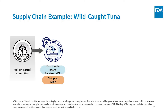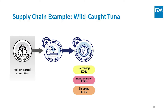Now that the tuna has been received on land, the seafood company is going to send it to a fish processor who will turn it into tuna steaks for sale at a restaurant. The seafood company must maintain key data elements related to the shipping of the tuna to the next point in the supply chain, the seafood processor. The seafood company must also send many of these KDEs to the seafood processor. The seafood processor receives the tuna from the seafood company and therefore must keep receiving KDEs of the tuna they receive. Most of the information that they need for these receiving KDEs will be sent to them by the seafood company.